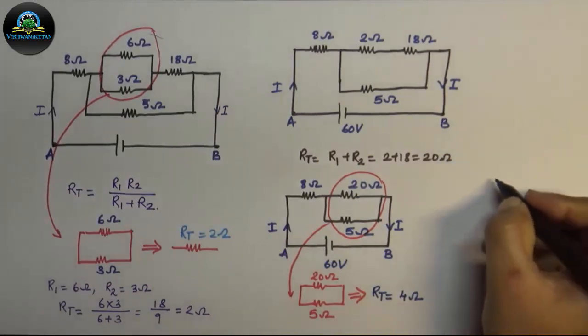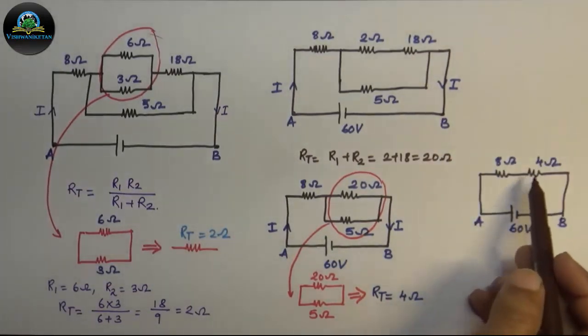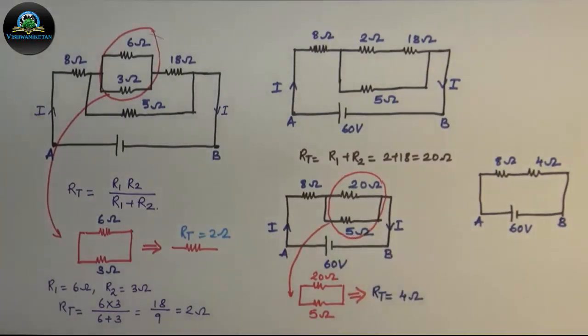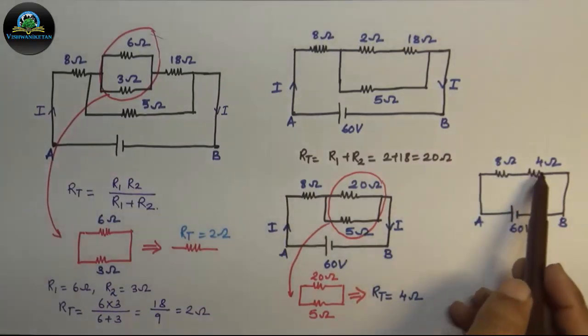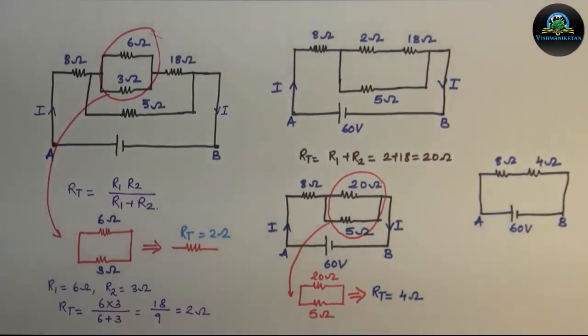Further, my circuit reduces to this: 4 ohm is the parallel combination of 20 and 5. From the reduced circuit, we get that the 8 ohm resistor and 4 ohm resistor are connected in series. Therefore, their total resistance will become 12 ohm.